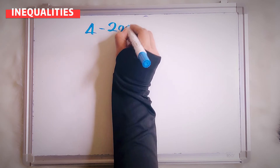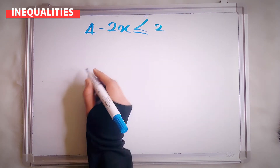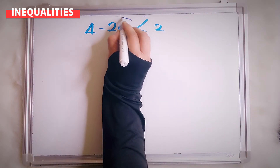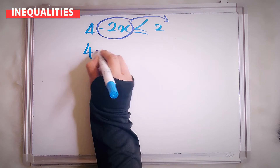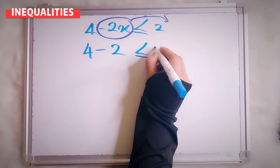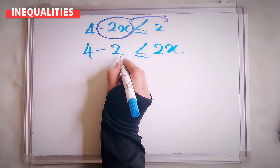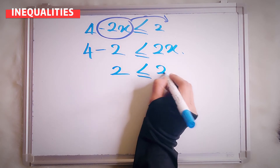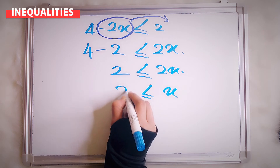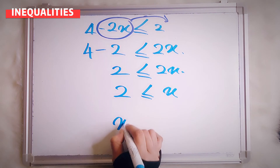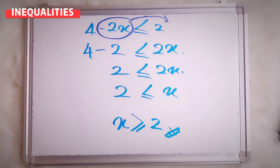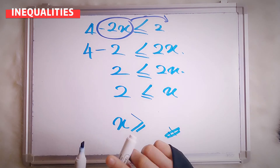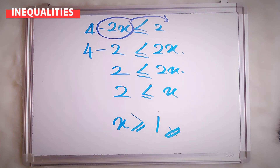Let's say I give you something like this: 4 minus 2x less than or equal to 2. Now I bring this to here because I want to make it positive. So now, 4 — this is positive, right? You bring to this side: negative 2, the sign is still the same. So here 2x. So 4 minus 2 is 2, less than or equal to 2x. So your x — we have to put x on this side. 2 divided by 2 is 1.